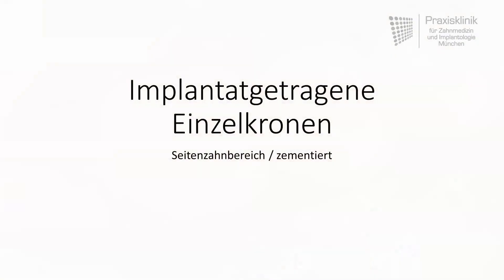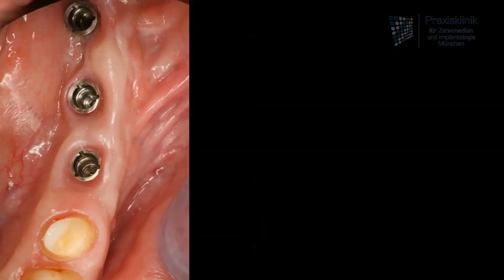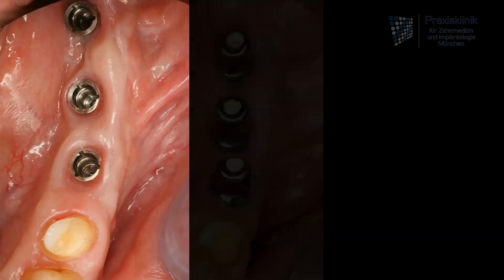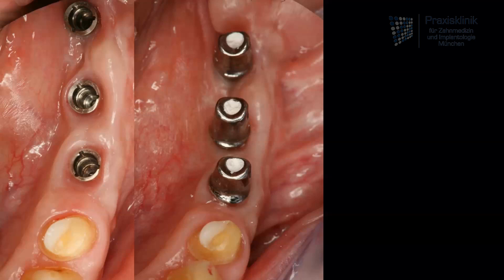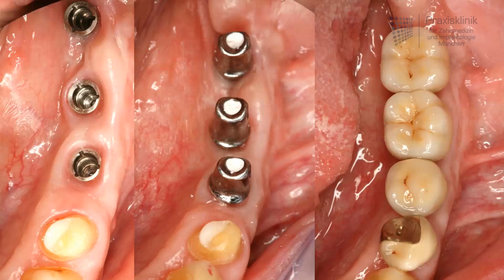The next case shows implant supported restorations also in the posterior region which are cemented. The first picture shows three implants in the posterior region after the removal of the cover screw. In the next step we see the connecting component and after that the final restoration. In this case we do not have a screw access hole.